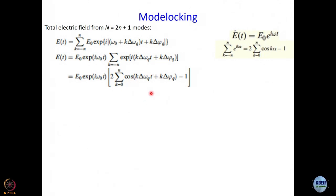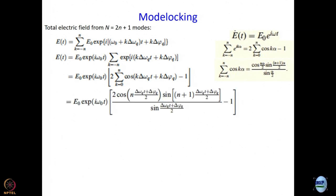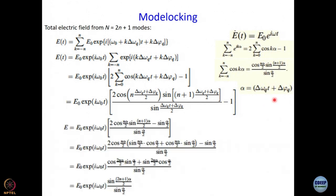All we need to know to go further is the summation of cosine terms. Substituting, with α = Δω_Q·t + Δφ_Q, we get an expression involving E₀·e^(iω₀t) multiplied by that cosine sum. Eventually we want to work with intensity, not field, so the e^(iωt) factor disappears when we multiply by its complex conjugate. What we do have to worry about is the term sin((2n+1)α/2) / sin(α/2).